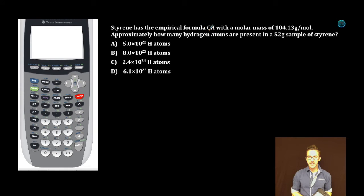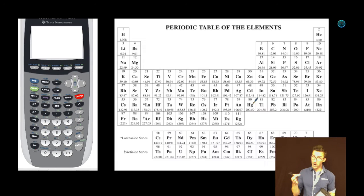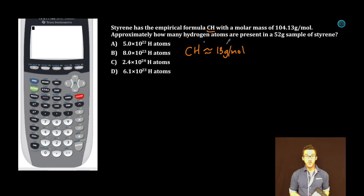First thing we're going to do is take a look at the empirical formula for styrene. CH. The molar mass of this empirical formula is about 13 grams per mole—carbon, hydrogen. However, we're told that styrene has a molar mass of 104 grams per mole. So this clearly is not the formula for styrene, not its molecular formula, not its true or actual formula.